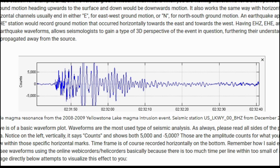Waveforms are what seismograms are made of. They show the way the ground moved in a particular direction, depending on the direction of the ground motion recorded by the station or channel. This assists seismologists in determining causes of earthquakes and types of material below ground. Different types of seismic waves travel through material differently. This can aid scientists in discovering new pockets of magma, oil, or water, and aid seismologists in detecting intricate processes taking place beneath our feet that would otherwise be hidden.